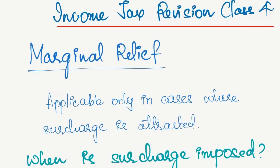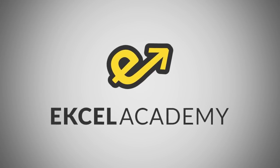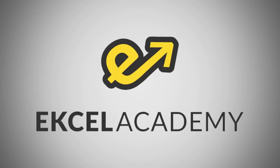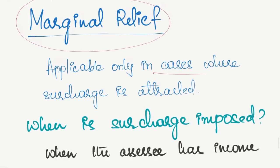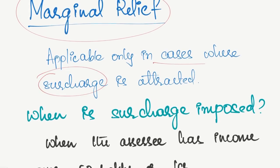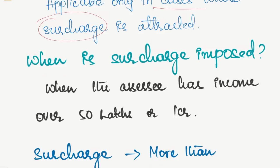Welcome to the revision class of Excel Academy. In this video we will be looking at the concept called marginal relief. Marginal relief is applicable only in cases where surcharge is applicable or attracted towards the income of the assessee. In the previous video we have already discussed and seen when surcharge is imposed and how it is calculated.